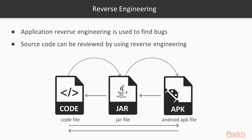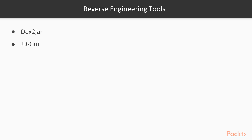This is really important because if you have an APK file for Android, you cannot check the code directly. You need to perform reverse engineering to get the code file so that you can analyze the code inside the application and find whether there are any bugs available. There are thousands of tools available, but we are going to use two: dex2jar and JD-GUI.